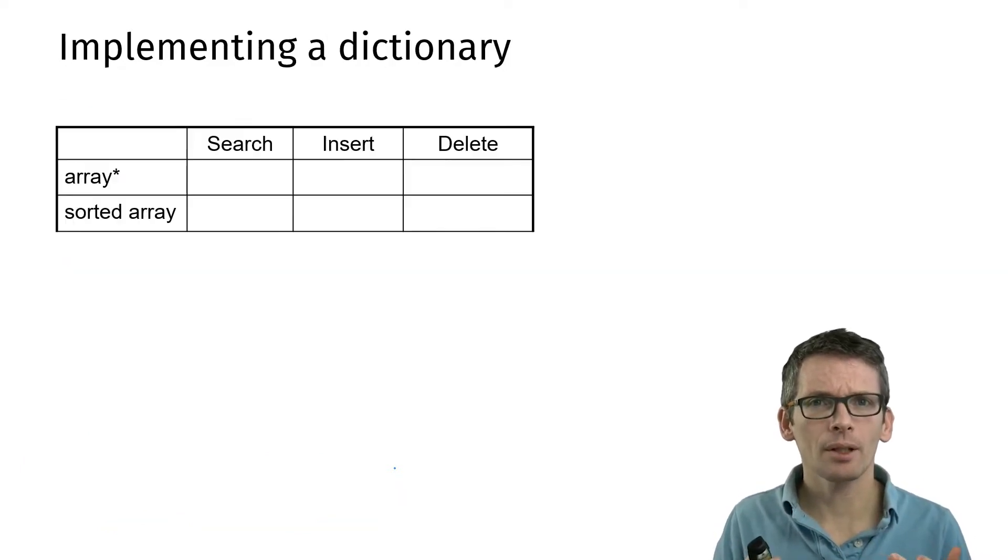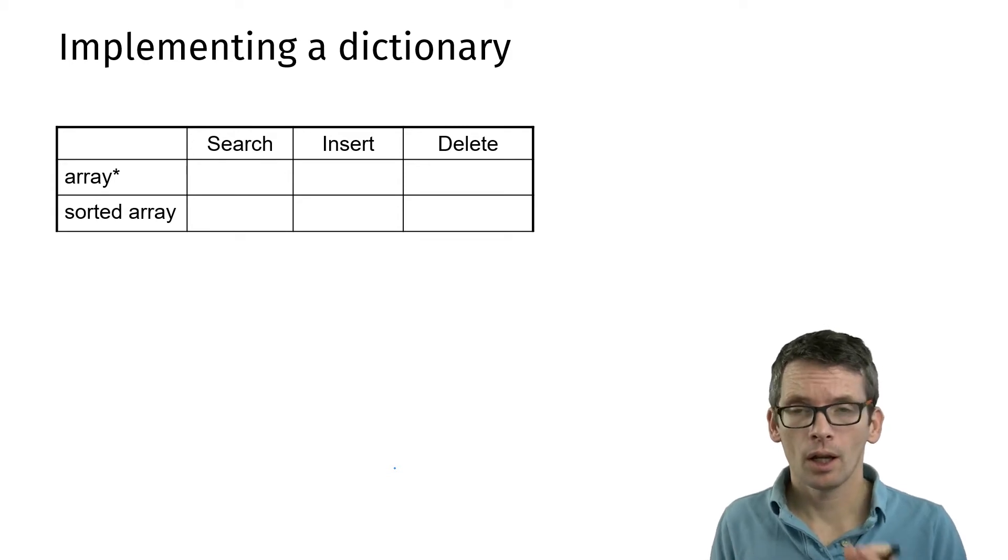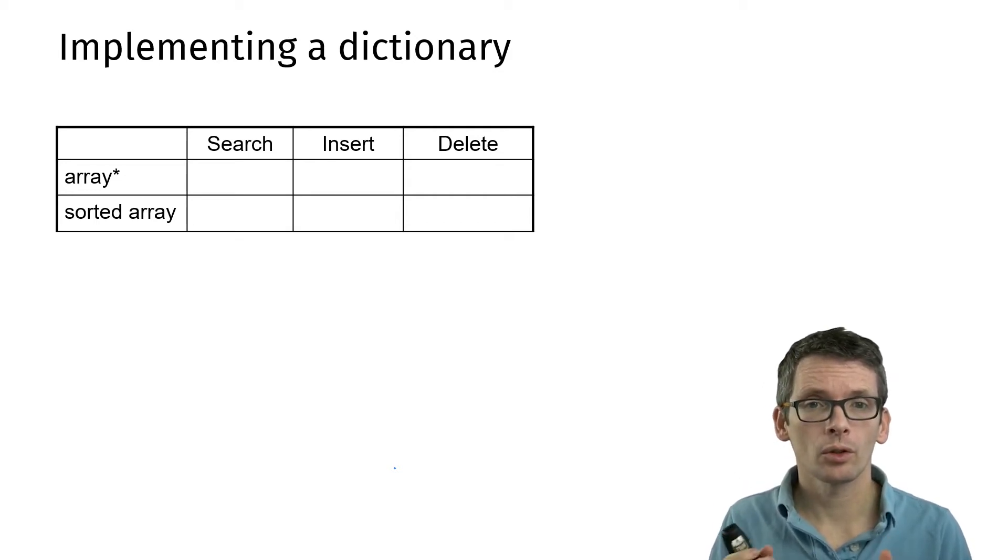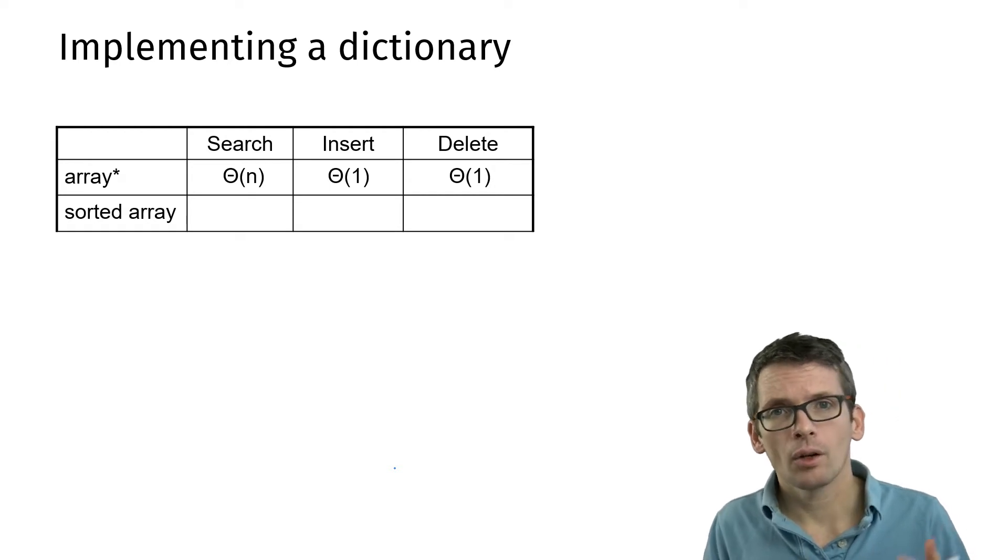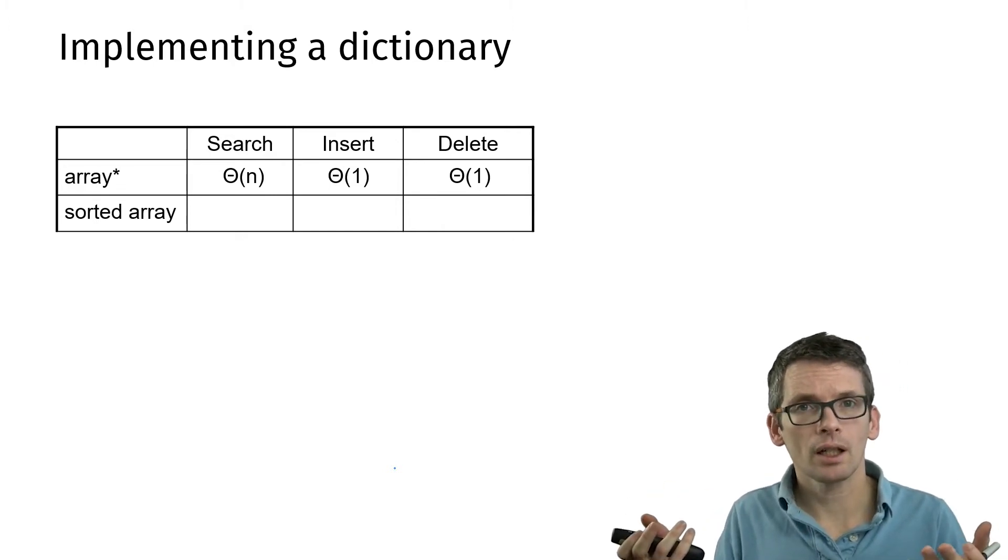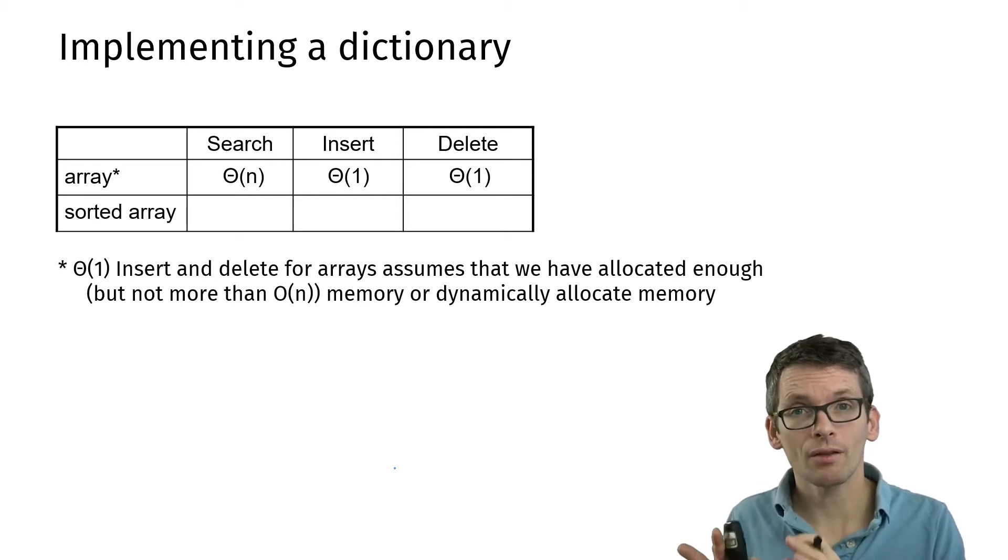Before we look at hash tables, let's see why we need a different data structure from the basic data structures we already know. For instance, why can't we use an array or a sorted array? To search in an array takes linear time, as we just saw. Inserting and deleting is actually quite fast, assuming we simply have place at the end to insert. Okay, deletions we have to be a bit careful because if I delete an element, there will be a free spot. So I have to do something clever in terms of amortization, but then that could work in constant time.